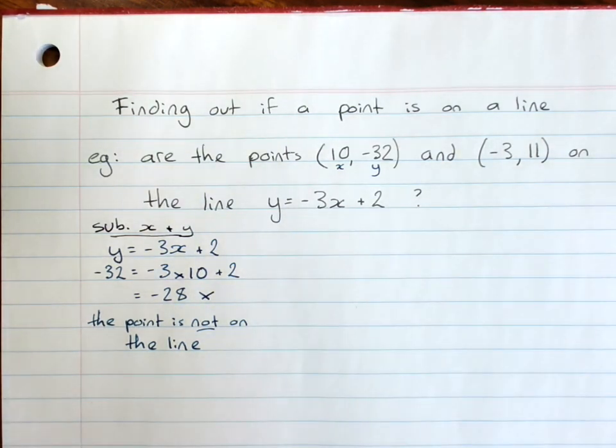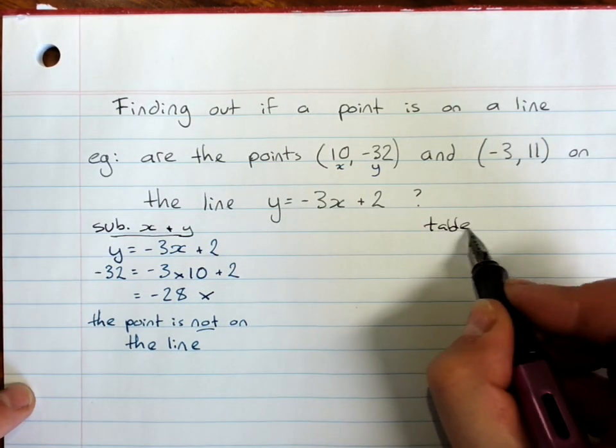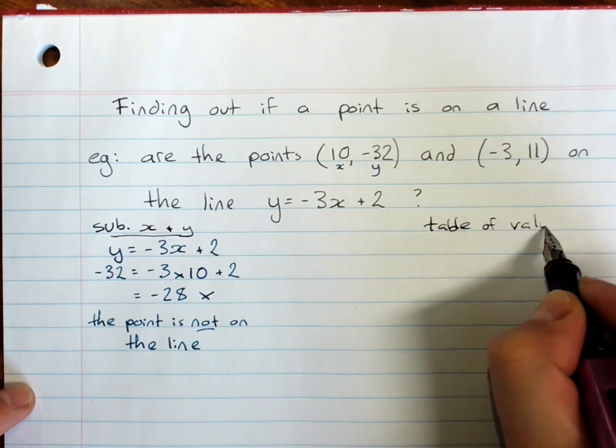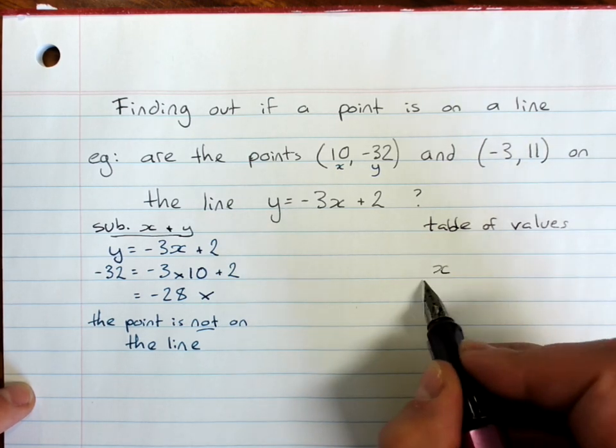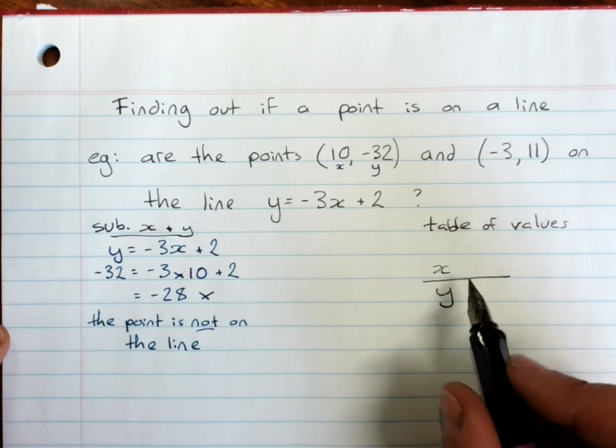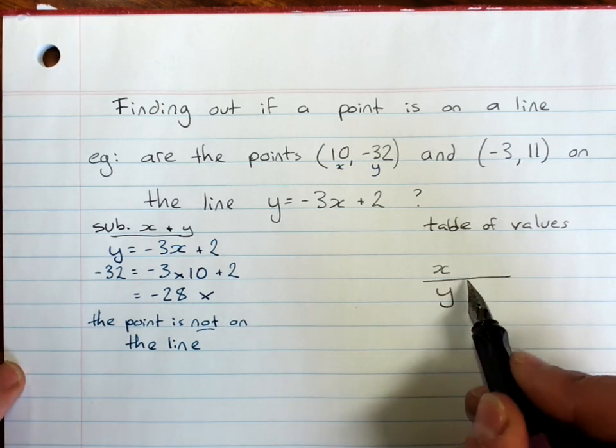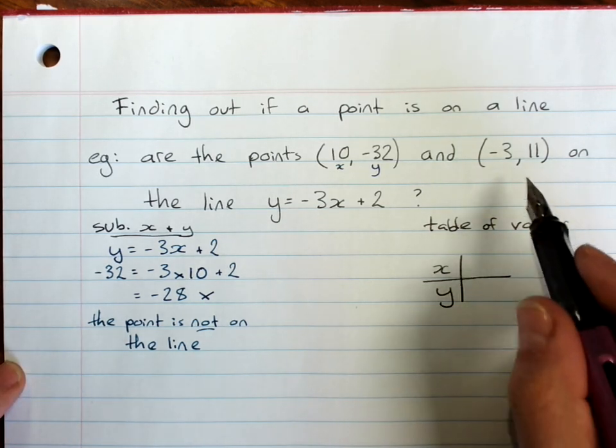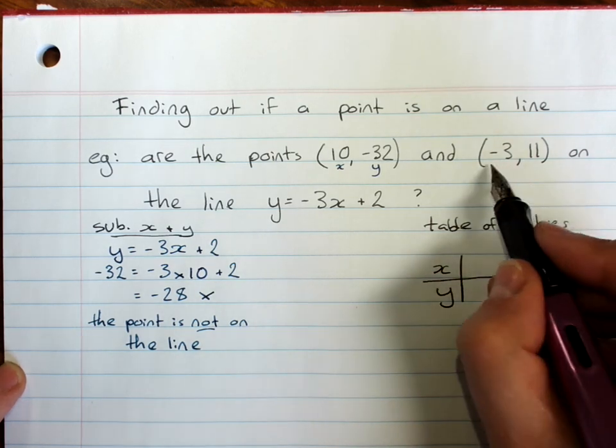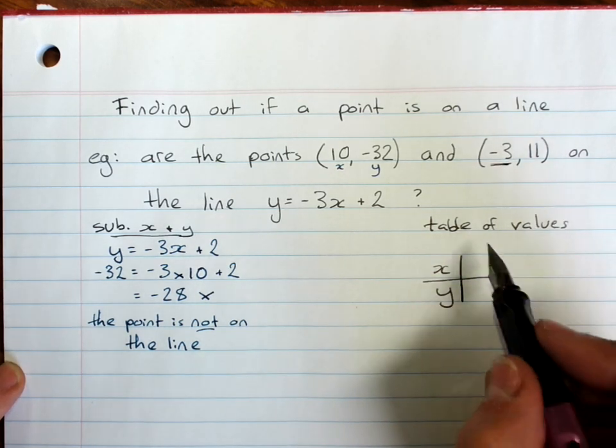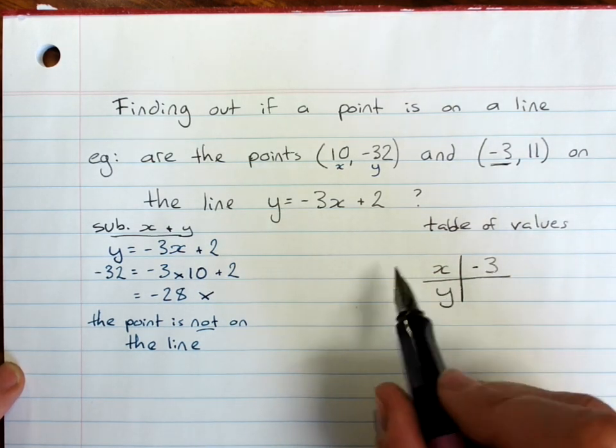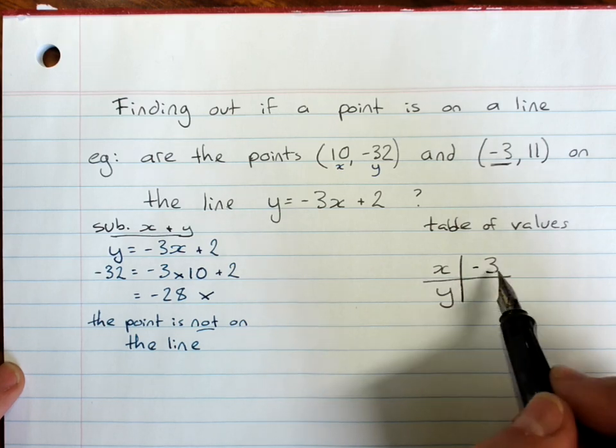The second method is to make a table of values, x and y. But it's actually a very small table of values. The only x I care about is the x in the question. And I'm going to find the y value when x is negative.